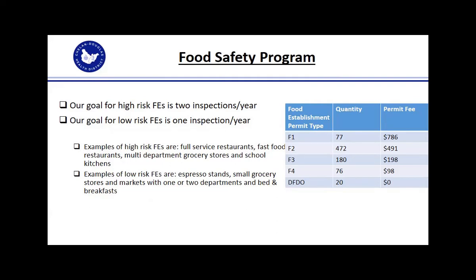We run this program on a risk-based inspection model. Our permit fees are also based on risk classifications. For our high-risk food establishments, our goal is to do two inspections per year; for low-risk establishments, our goal is one per year. Examples of high-risk establishments are full service restaurants, fast food restaurants, multi-department grocery stores, and school kitchens.